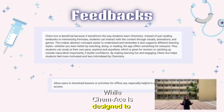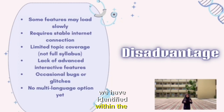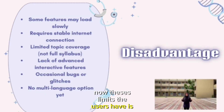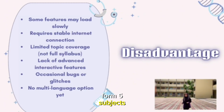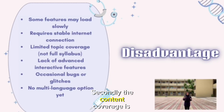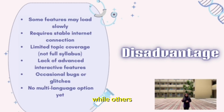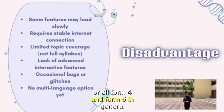While ChemAIDS is designed to support chemistry learning, there are two key problems identified within the app. Firstly, the Form 4 syllabus is missing, which limits users from having a complete learning experience, especially those starting out or revising Form 4 and Form 5 subjects. Secondly, the content coverage is unbalanced — some topics are well developed while others lack depth or interactive support, creating a gap in learning that may confuse students.